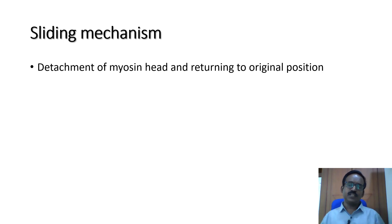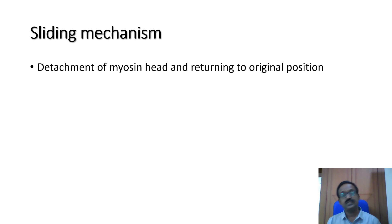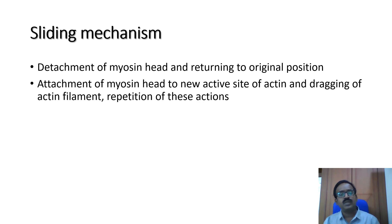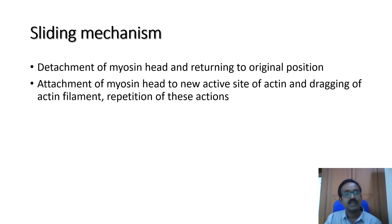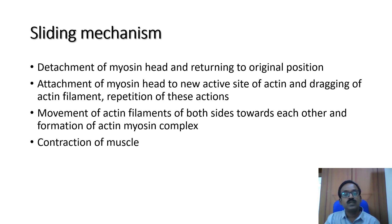For the detachment of the myosin head and its return to the original position, ATP must bind with the myosin head; otherwise, contraction will remain. This is why rigor mortis occurs after death — due to non-availability of ATP, this detachment step is affected. The myosin head then attaches to the next active site of actin and tracks the filament toward the center. This cycle repeats until contraction is over, resulting in movement of actin filaments from both sides toward each other and formation of actin-myosin complexes.